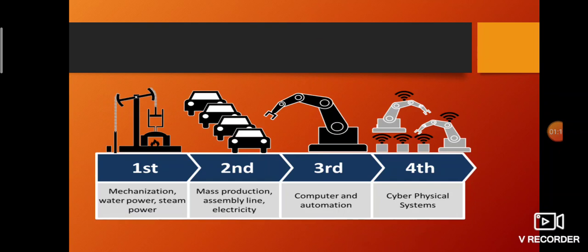When we talk about the Industrial Revolution, it started in the 1750s. There were four phases: the first was Mechanization, helped by steam power and water power; the second was Mass Production and assembly line with electricity; the third in the 1970s was Computer and Automation; and the fourth, which we are currently in, is the Cyber-Physical System.